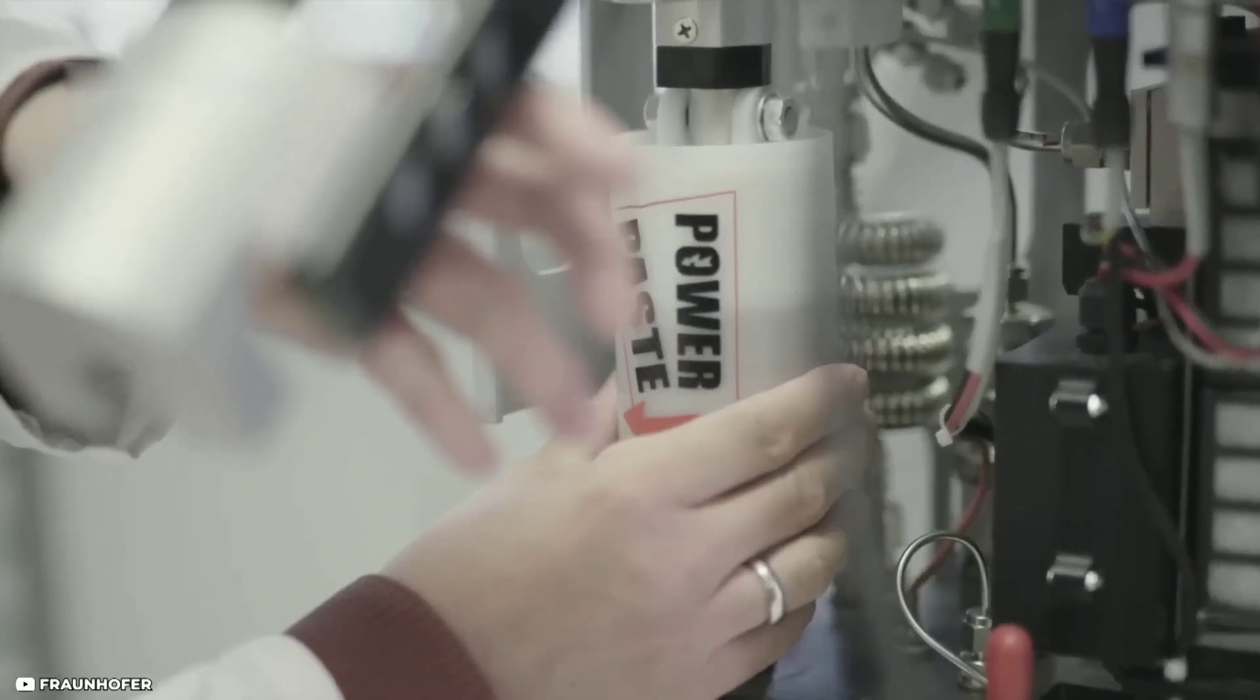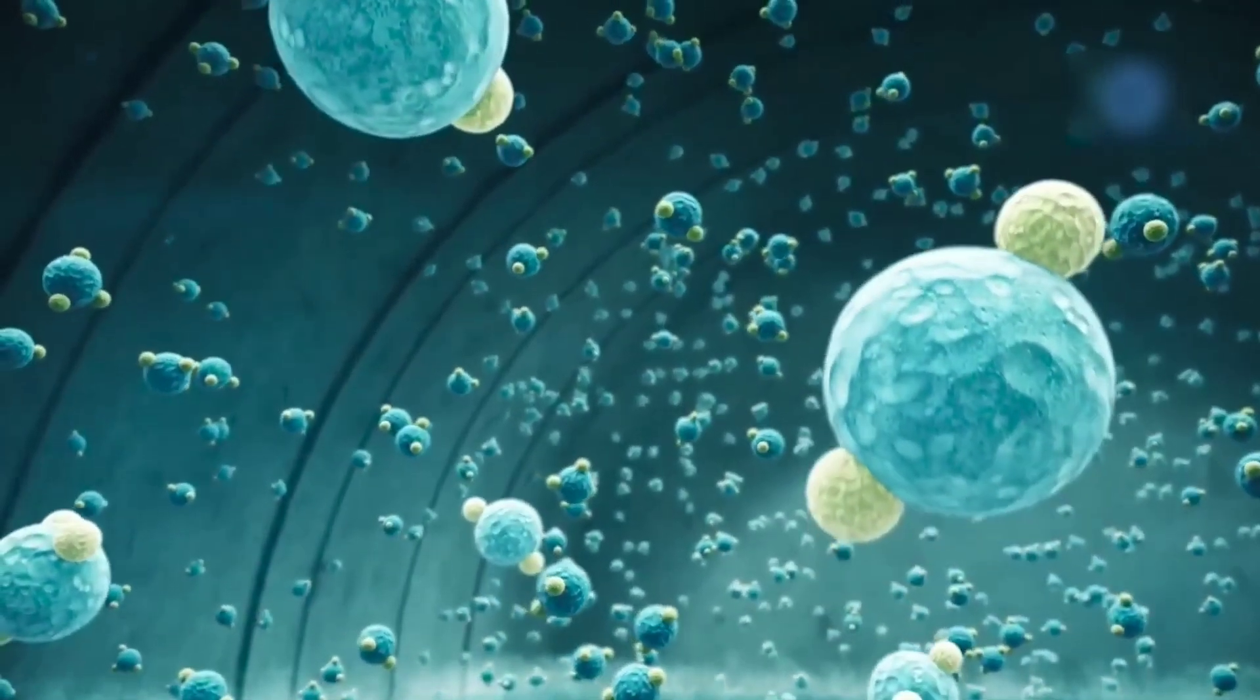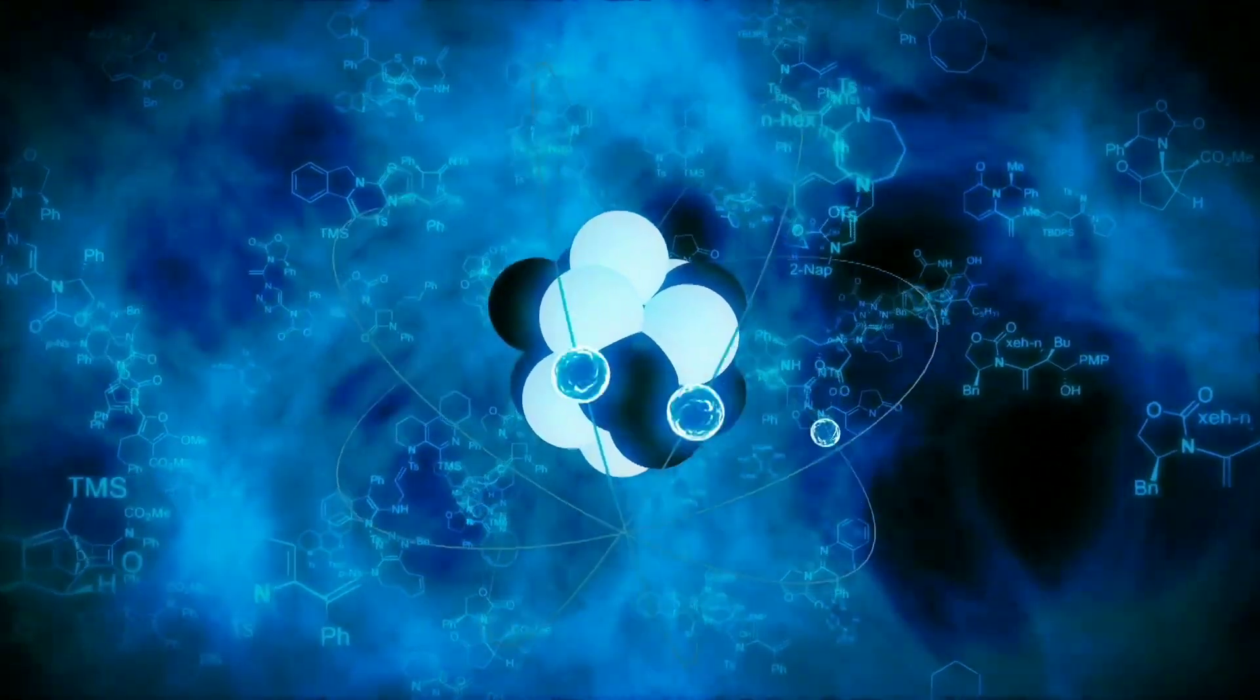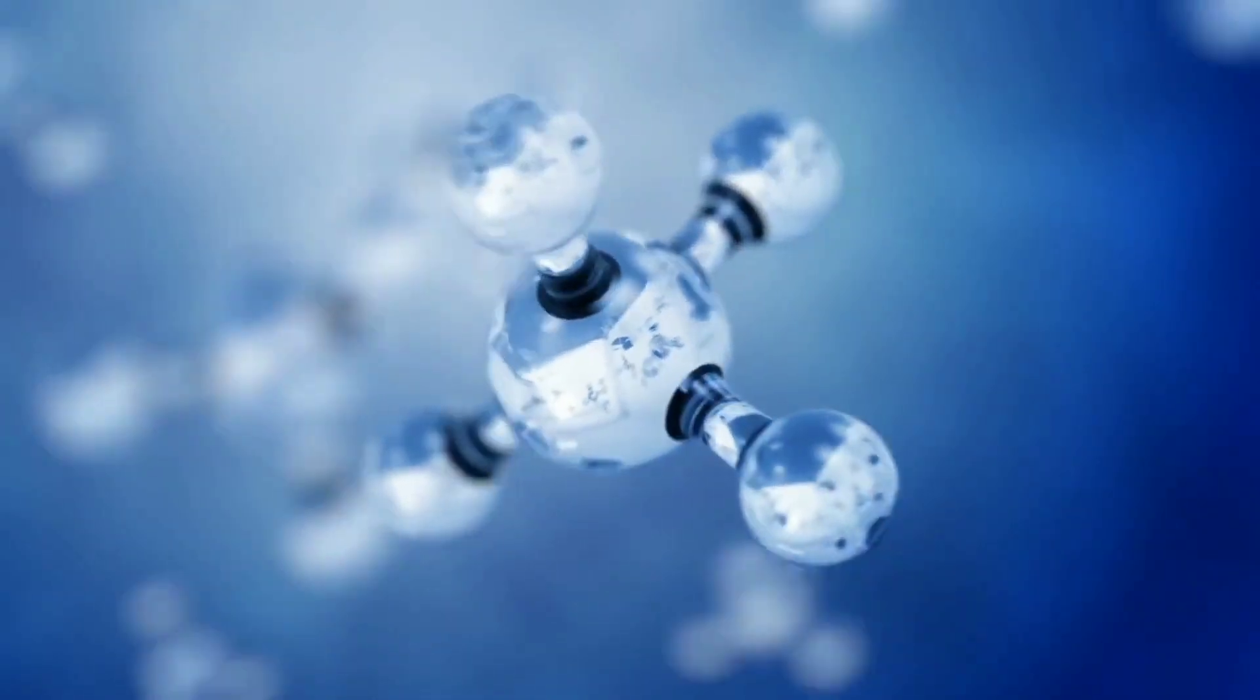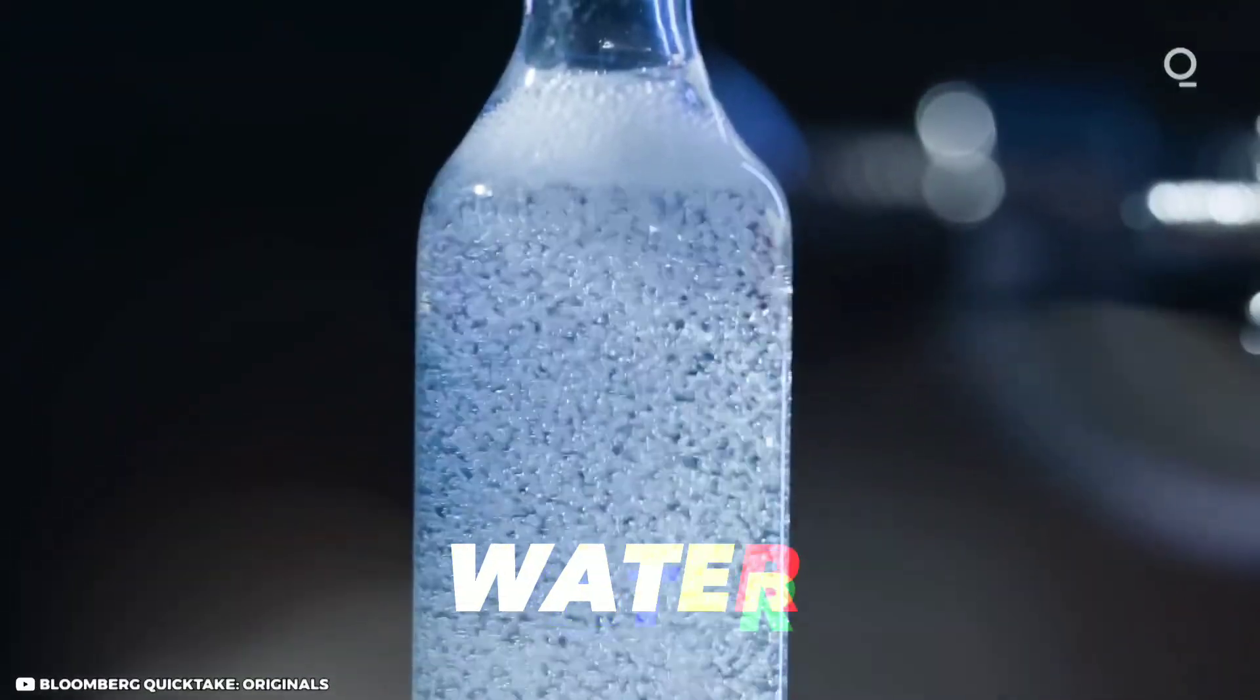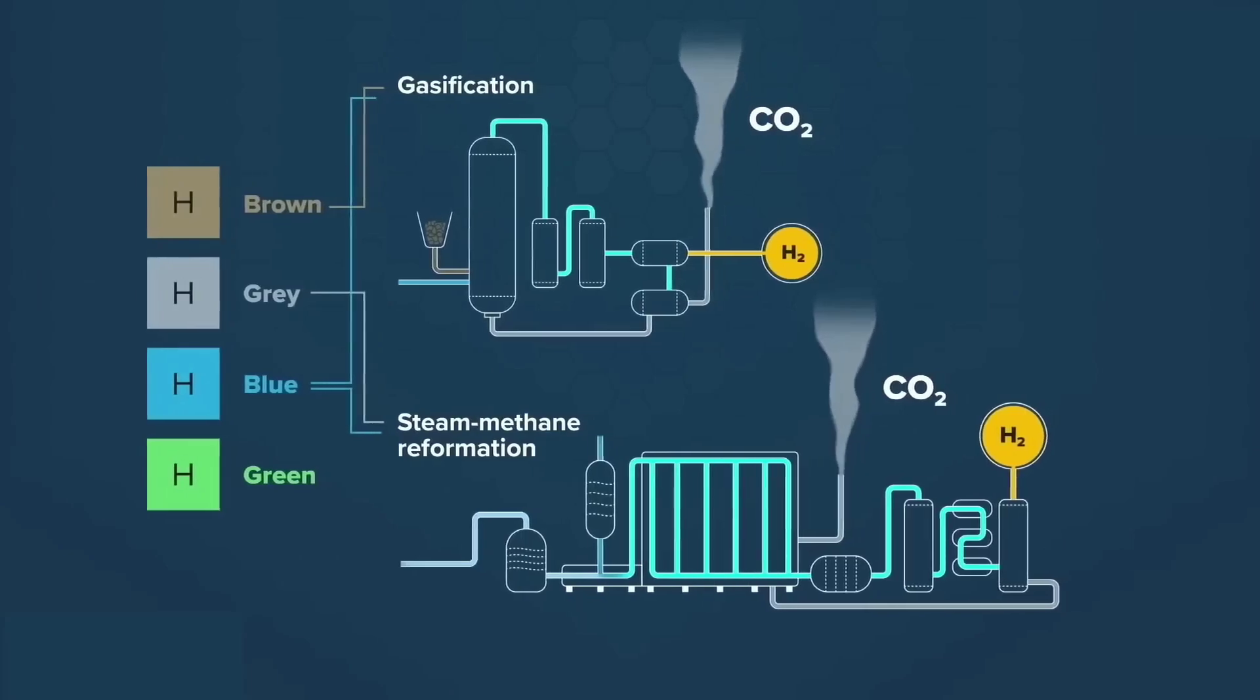Hydrogen is the simplest and lightest element in the world. It has only one proton and one electron in its atom and can bond with almost any other element. However, this simplicity and lightness also make hydrogen hard to find and use on Earth. Hydrogen is so light that it escapes Earth's gravity and floats into space. Most hydrogen on Earth is in the form of compounds such as water or methane.